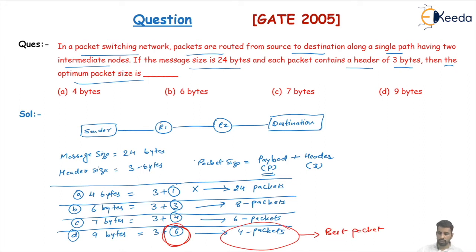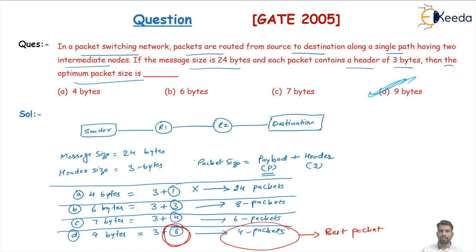So our correct answer is Option D. This is the best packet with less overhead and high payload size. This is how we can choose the optimum packet size, which causes less overhead on intermediate devices — meaning less delay — and allows us to transfer more and more data.